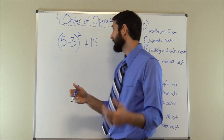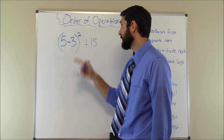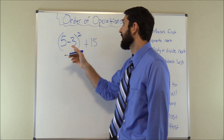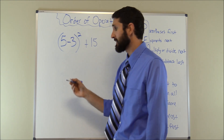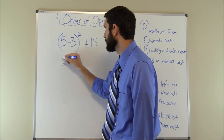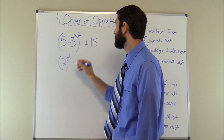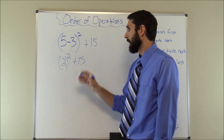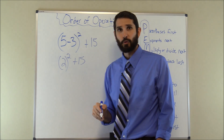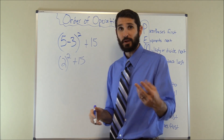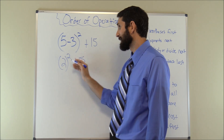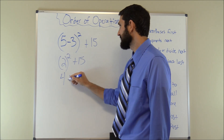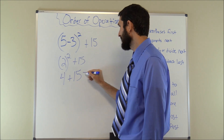For our next problem we have (5 − 3)² + 15. Following our mnemonic PIMA, parentheses come first, then the exponent, then addition. So 5 − 3 = 2. We write 2 and carry down the exponent, giving us 2² + 15. Next in the order of operations is exponents, so we solve 2² = 2 × 2 = 4.